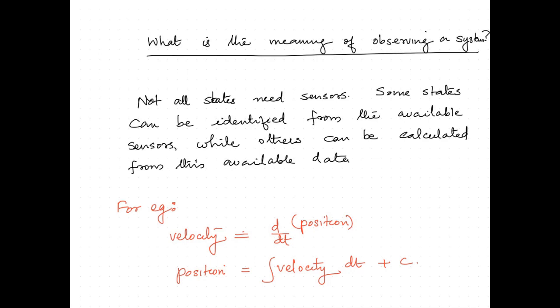Now we will see what is meant by observing a state. Not all states need sensors — some states can be identified from the available sensors, while others can be calculated from the available data. For example, we can find velocity by taking the derivative of position, or find position by integrating velocity. So even if only one sensor is there, we can identify the other state. Observing a system doesn't mean there should be sensors for all states; you should have methods to identify other states from the available ones.